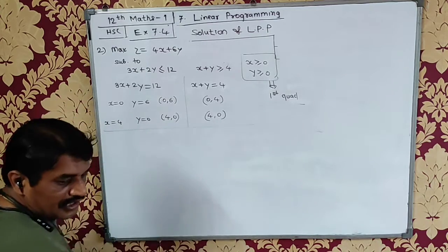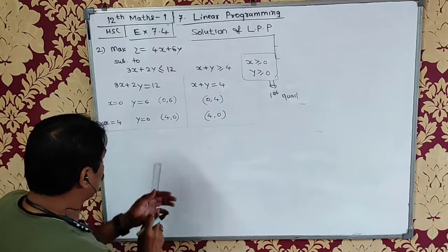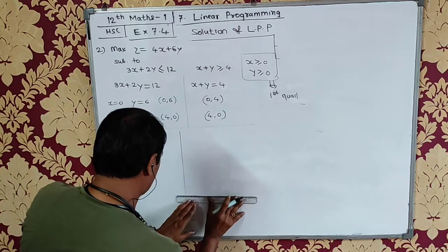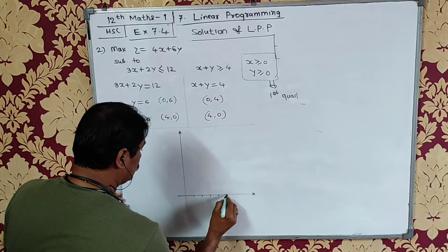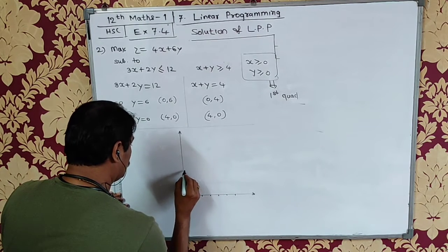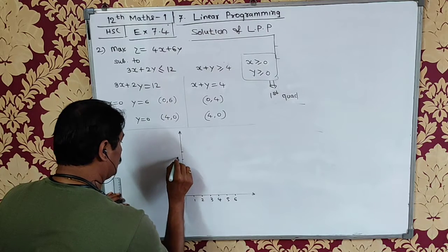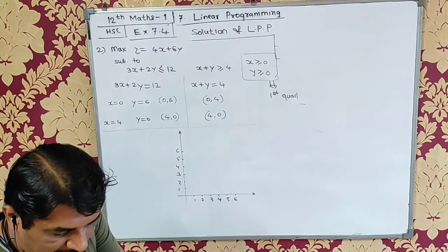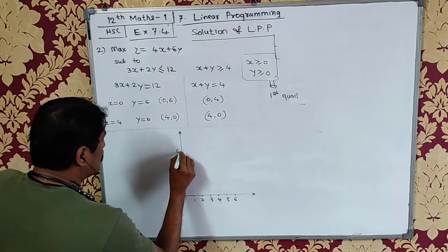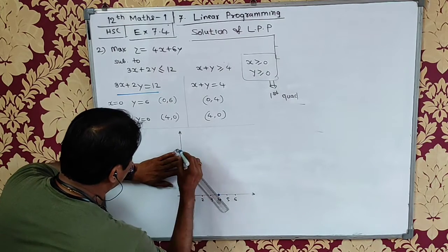Now we will plot the lines. We will plot the points and we will show the lines on the graph. Let's mark the points here. This line is (0,6) and (4,0), so this line is shown here like this.